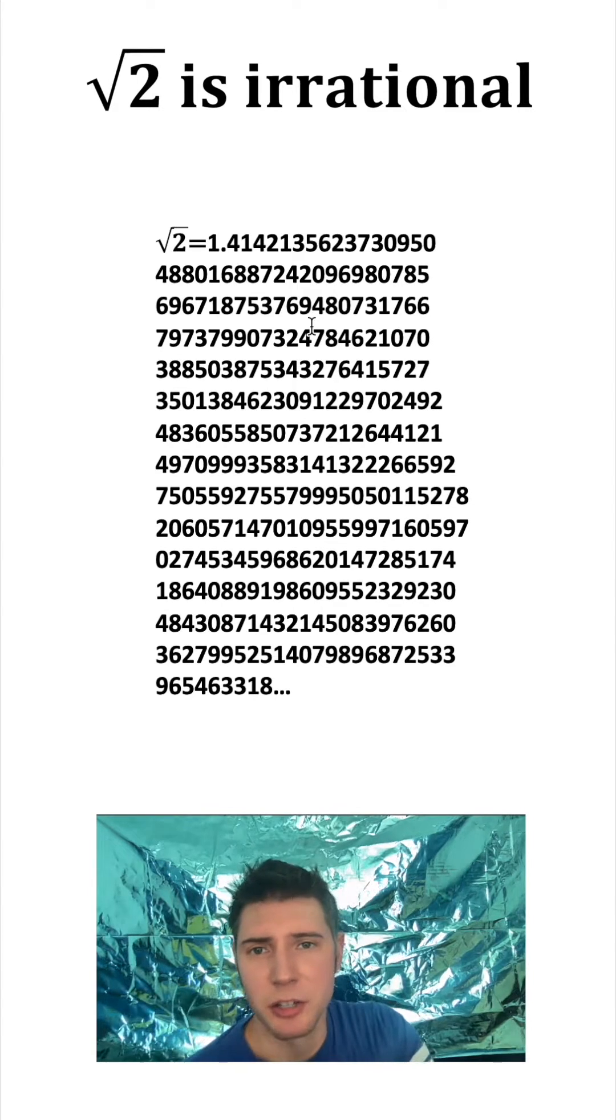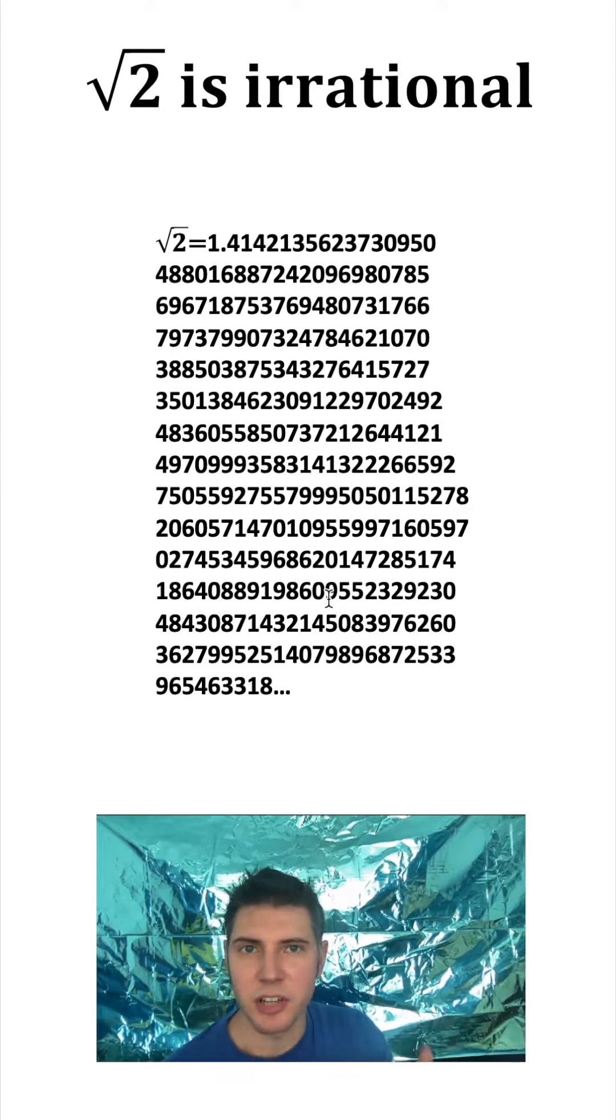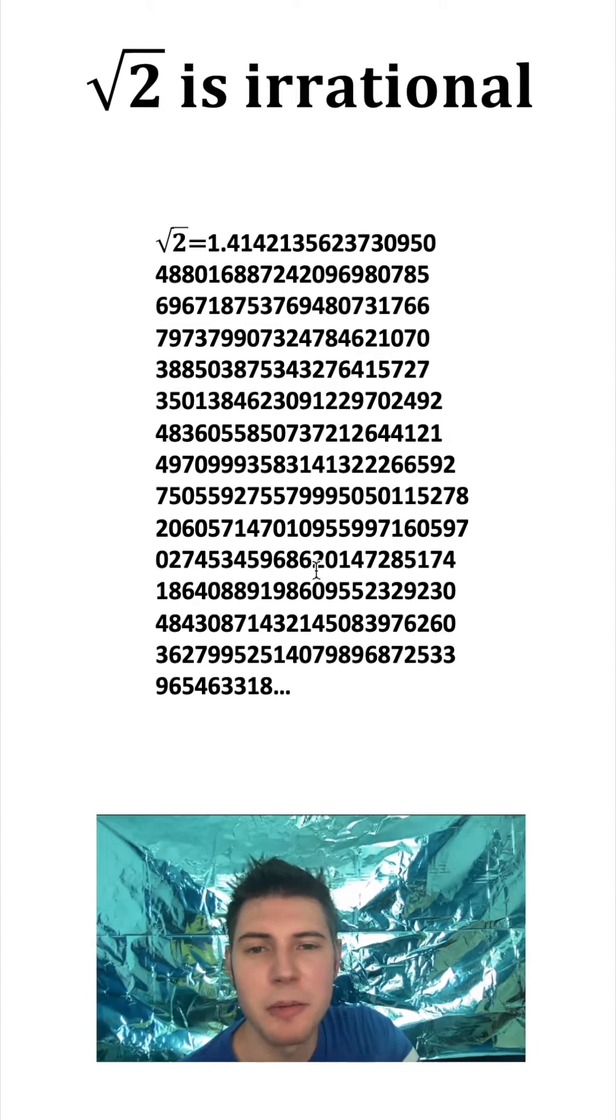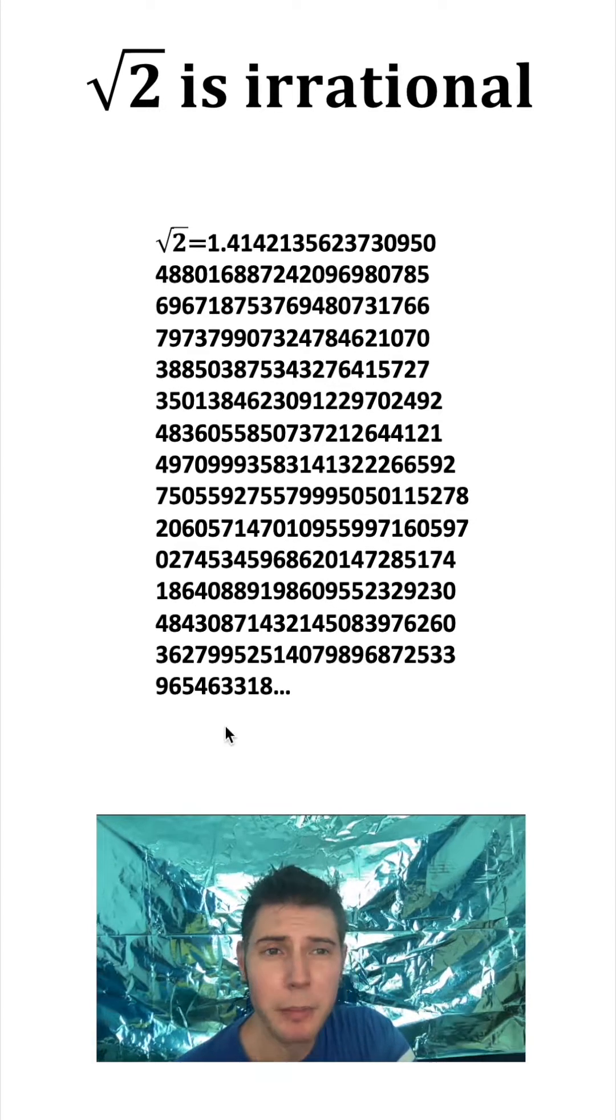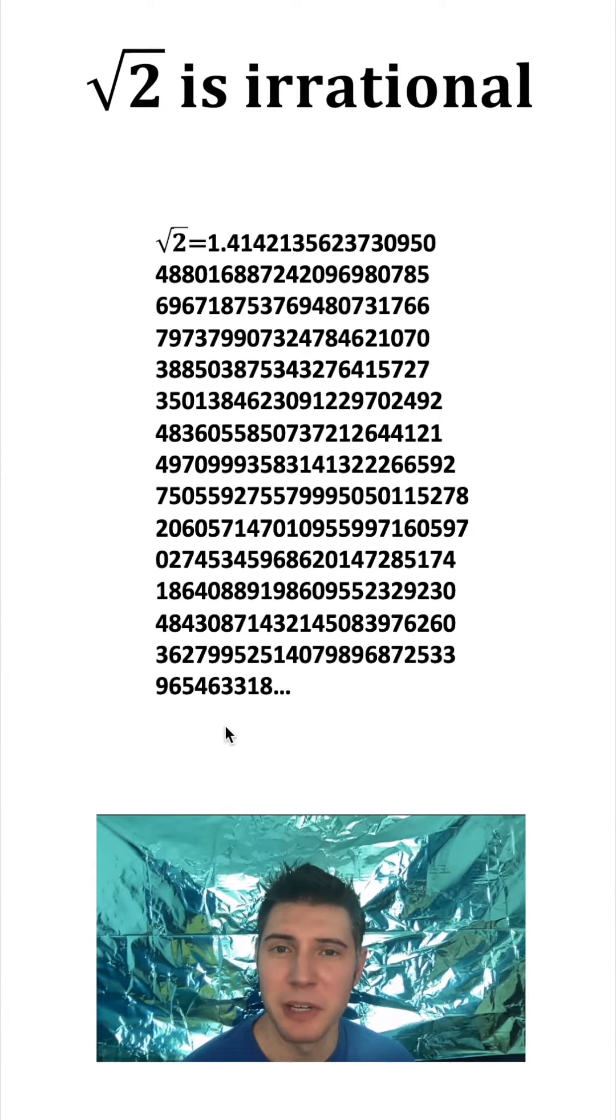So what is irrational? First, if we look at it in decimal form, these numbers will never terminate, they'll never stop, and they'll never repeat. This will just keep going on forever in an unpredictable pattern. But how do we know that? We can't possibly check forever. So how do we know that it doesn't eventually repeat?